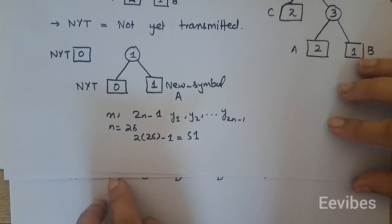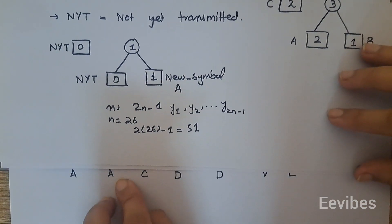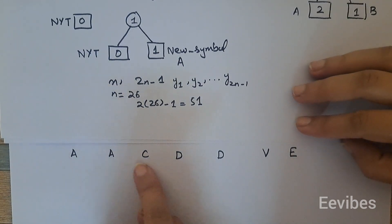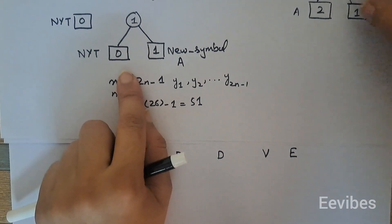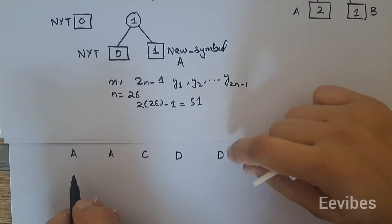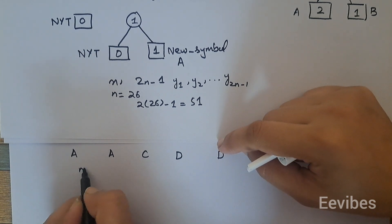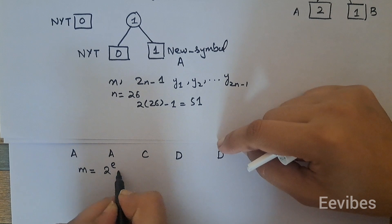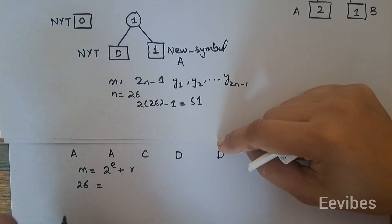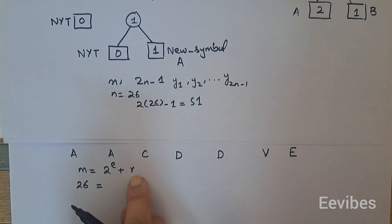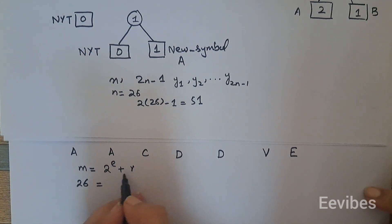Hi everyone, this is Asma Mushtaq from the Double EE Wipes. In this part I am going to explain how codes will be assigned to symbols according to the adaptive Huffman coding scheme. In adaptive Huffman coding, we write m = 2^e + r. Since m equals 26 in this case, we choose values of e and r such that r is always less than 2^e.